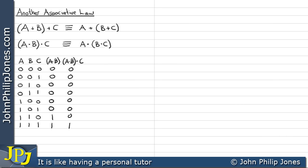Now I look at what happens when we AND together B and C. Scanning down, there are two occasions where both B and C are one — producing a one in each of those rows. For every other combination, at least one input is zero, so all remaining entries in this column are zero.